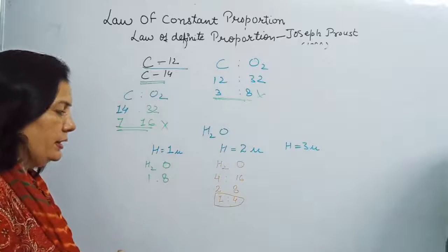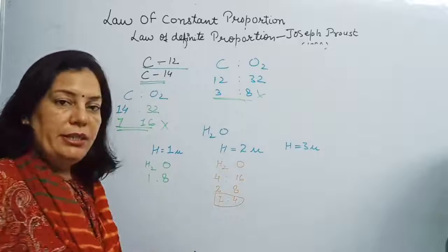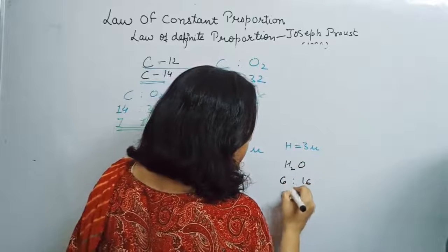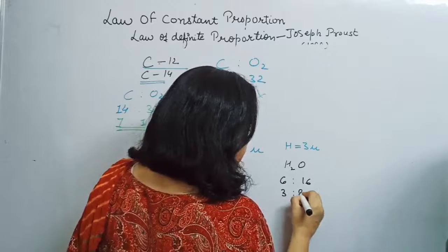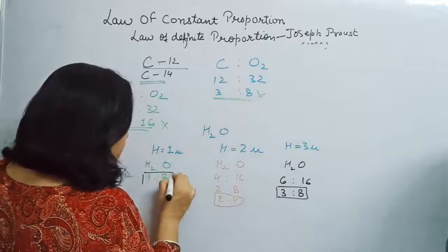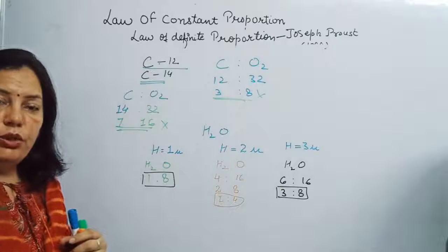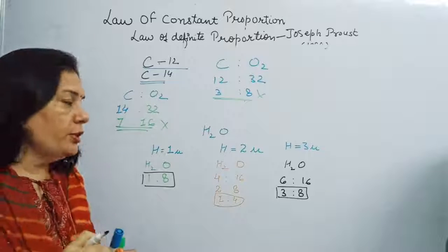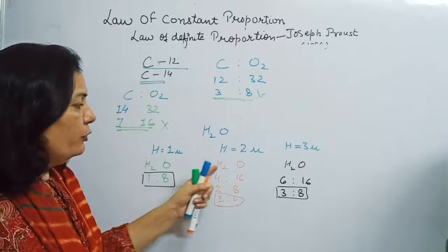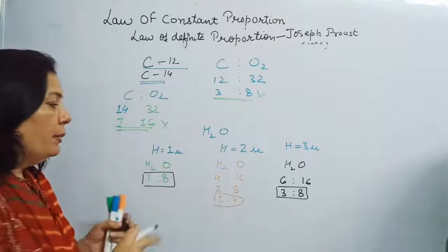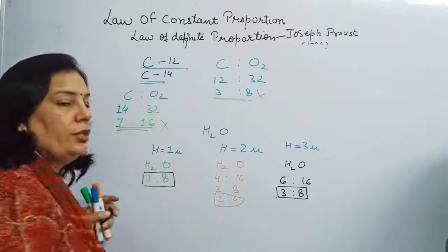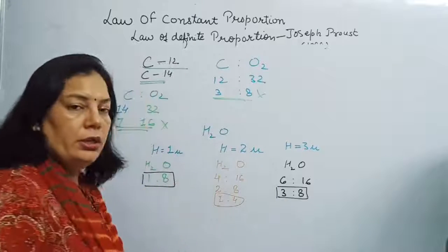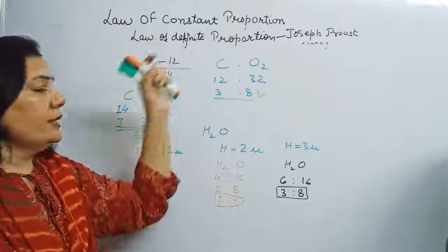Let us discuss tritium as well. If tritium reacts with oxygen, two atoms of tritium give 6 units of mass, so the ratio is 6:16, which simplifies to 3:8. We can see that all three are water — the same compound — but the ratio of hydrogen to oxygen is different: 1:8 for protium, 1:4 for deuterium, and 3:8 for tritium.